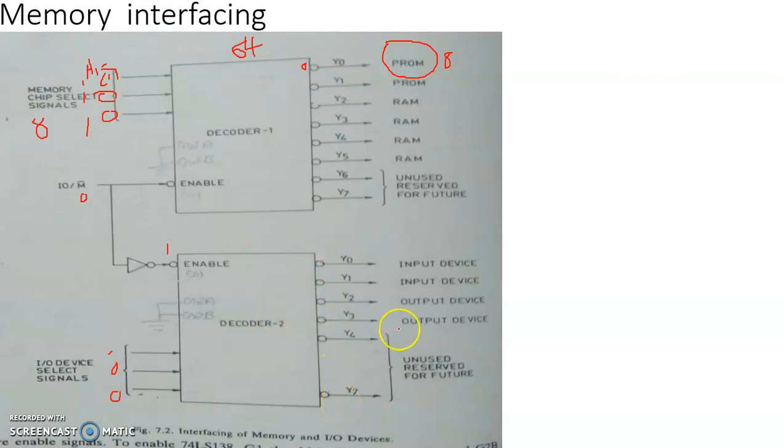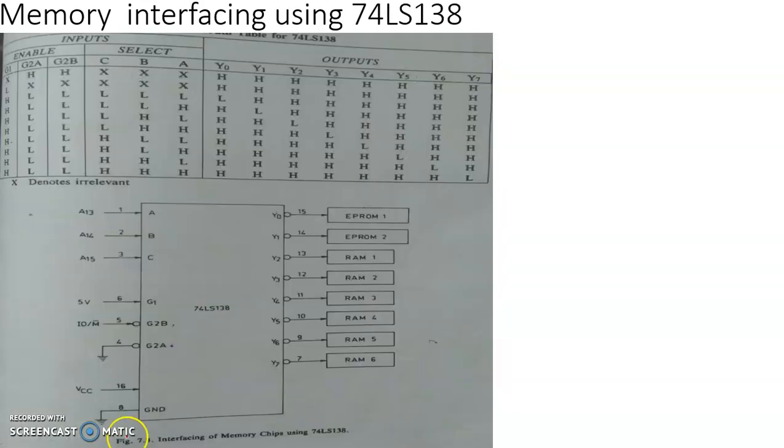All the others will be disabled. Input device 1 will be selected to perform the operation. Of course, since it happens to be an input device. If the status is 1, 1, 1, then Y7 will be enabled and the device connected to the channel Y7 will be capable of making a communication with the microprocessor.